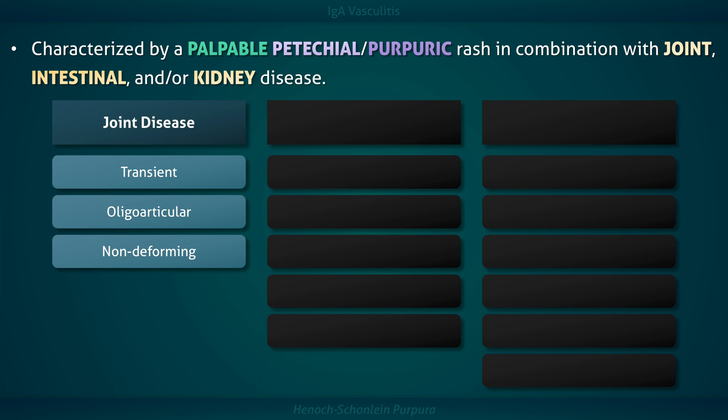The joint disease is typically transient, oligo-articular with a predilection for the hips, knees, and ankles, and non-deforming.